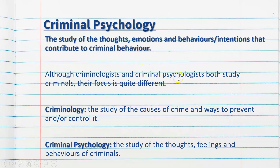Criminologists and criminal psychologists both study criminals, but their focus is quite different. Criminologists study the causes of crime and ways to prevent and control it — so before the fact — whereas criminal psychologists study the thoughts, feelings, and behaviour of criminals who have already been caught, so that's after the fact.